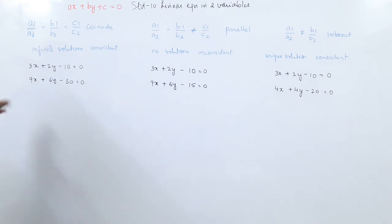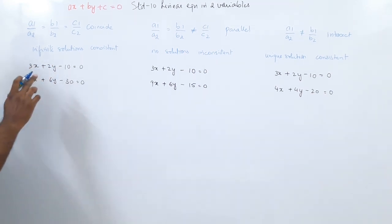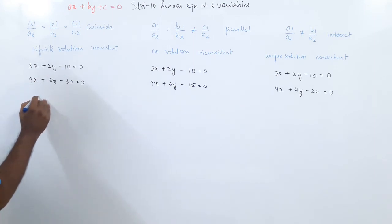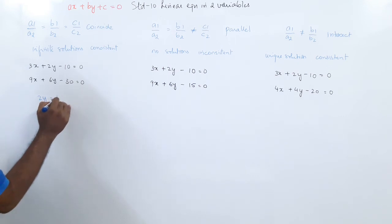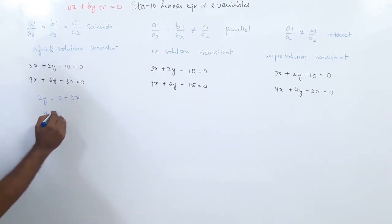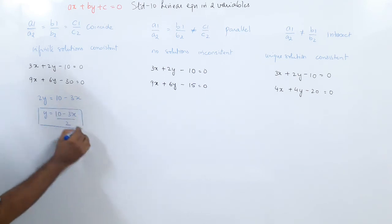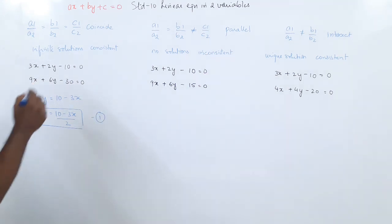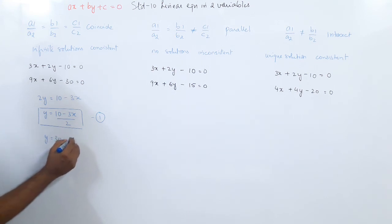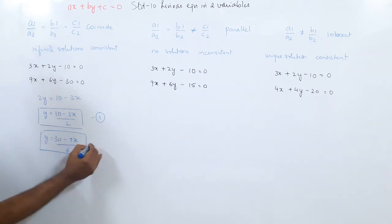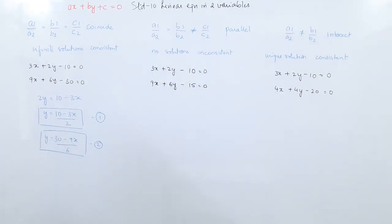How do we plot the graph? Yesterday I showed you the method. We make y the subject of the equation. So 2y = 10 − 3x, which gives y = (10 − 3x)/2. That is the y of equation 1. For the second equation, y = (30 − 9x)/6. After making y the subject of the formula, we plot a few points by making a small table, taking some values of x and finding the corresponding values of y.